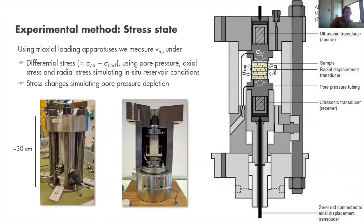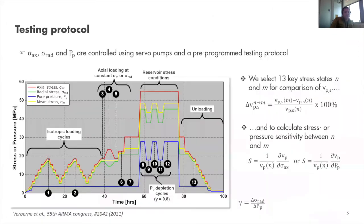These photos show two of the machines, including a cross-section with the sample in the center. Importantly, we can control axial stress and radial stress independently.